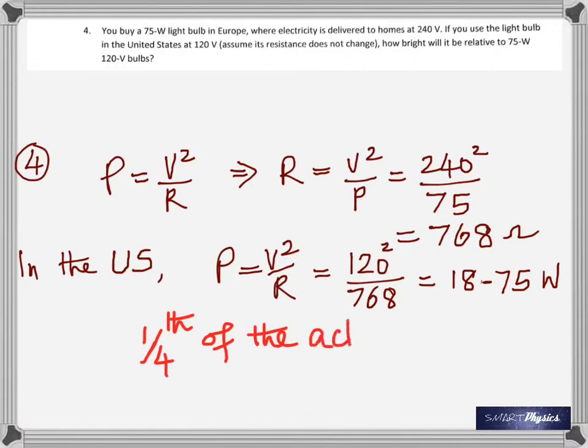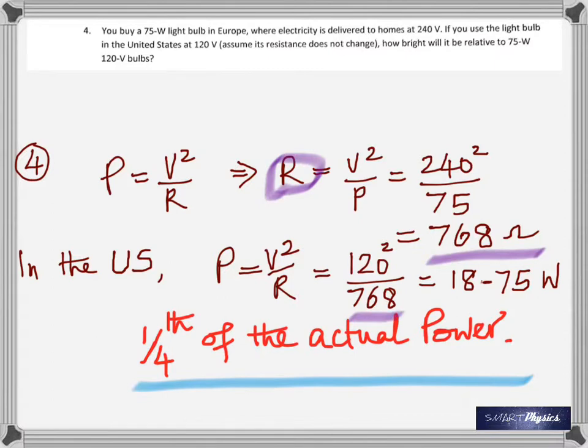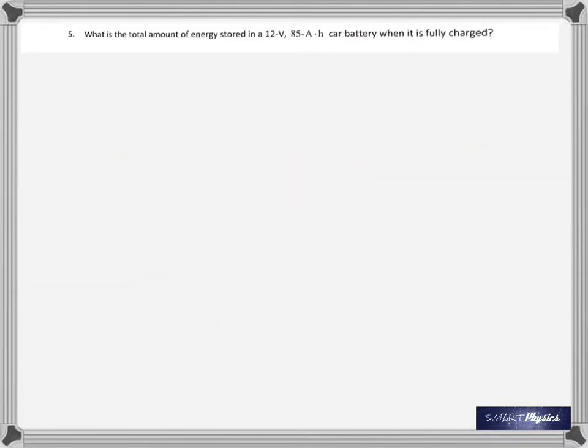This could have been done simply as a ratio problem, because when the voltage becomes half, the power becomes one-fourth, so it could have been done directly like that. Number five: what is the total amount of energy stored in a 12 volt, 85 ampere-hour battery when it's fully charged?